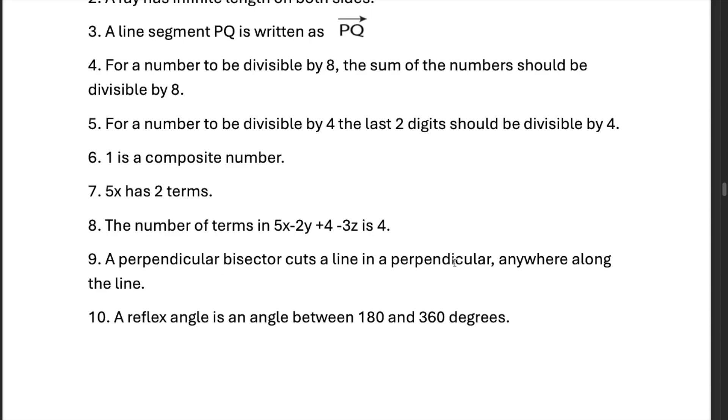A perpendicular bisector cuts a line in a perpendicular along anywhere along the line. That's wrong because it has to bisect it right down in the middle. A reflex angle is an angle between 180 and 360 degrees. That is correct. 8x is considered only one term. That's correct. Thank you.